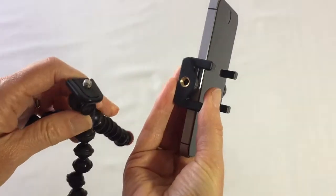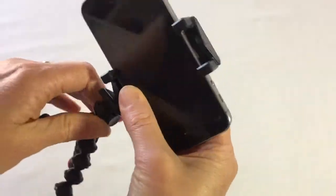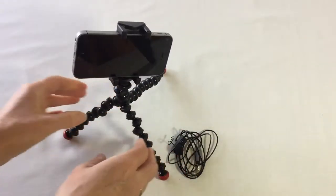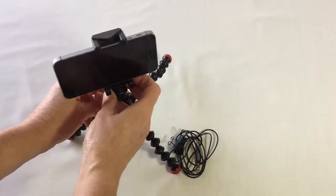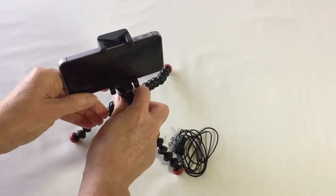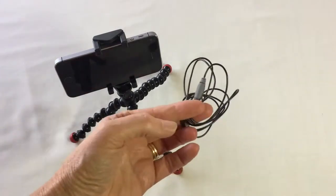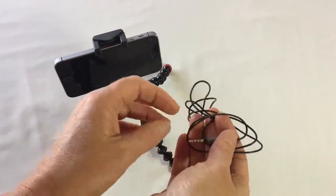So that can screw into the tripod mount like this. Now your phone's nice and stable. You want to get it straight, and you're ready to record. I use an external mic because you get much better sound.